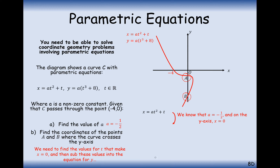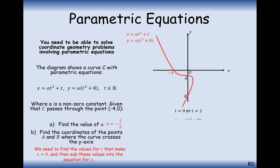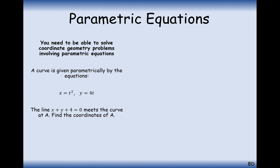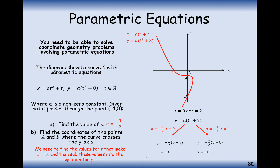We find the t values at which the curve crosses the y axis and plug them back into y. Using a equals minus half and x equals zero, we rearrange and factorise to get t equals zero or t equals two. Plugging these into the y equation: when t equals zero, y equals minus four; when t equals two, y equals minus eight. So coordinates A and B are (0, -4) and (0, -8).